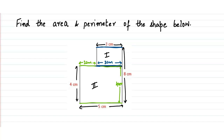Now if this much is four centimeters, we have been told that this entire length from here to here is eight centimeters, so this tells us that this missing side should also be four centimeters.